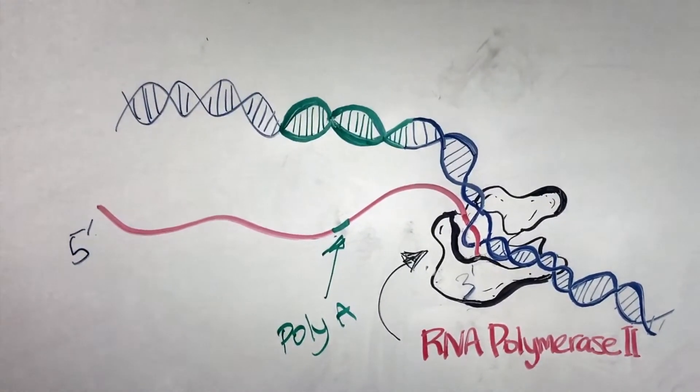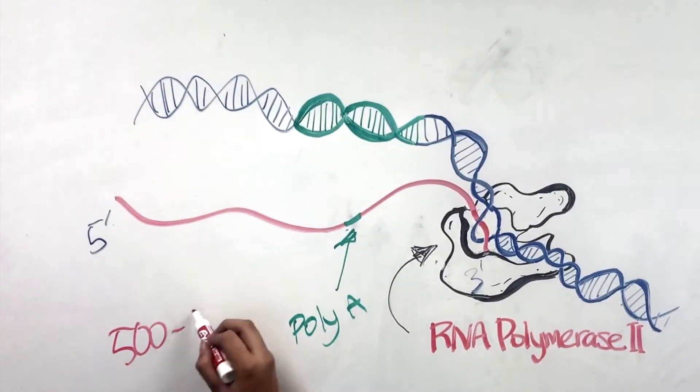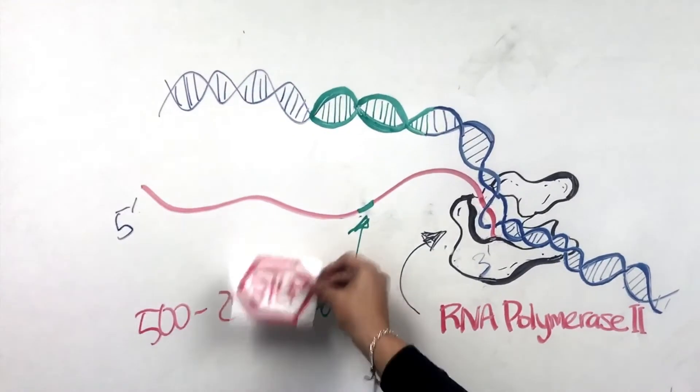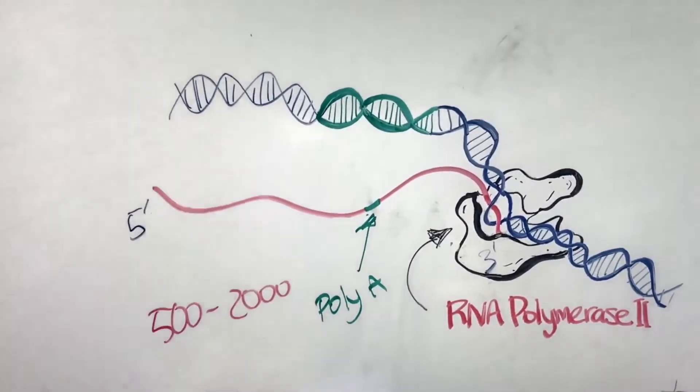which is a string of adenine nucleotides that directs the cleavage of the mRNA. About 500 to 2,000 nucleotides after the poly-A signal, transcription stops and the mRNA is released.